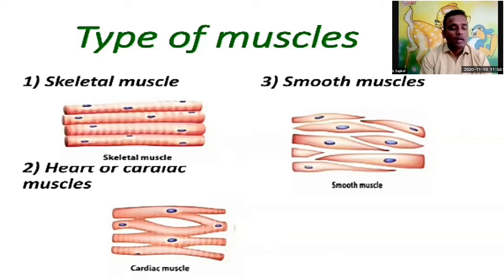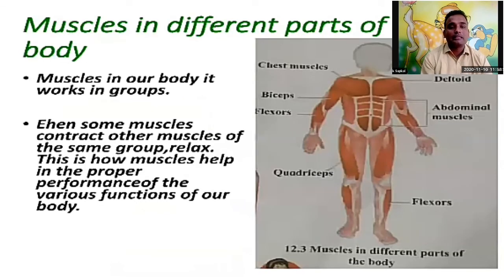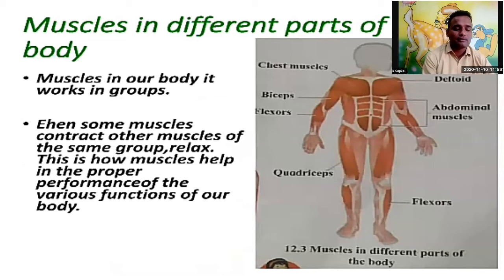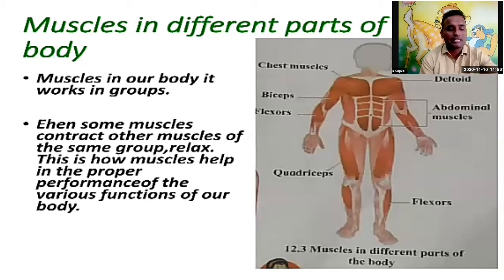Muscles in different parts of the body include the biceps and triceps. Muscles always work in a group — even as some muscles contract, other muscles in the same group relax. This is how muscles help in the proper performance of various body functions. Examples include quadriceps, flexors, biceps, triceps, and chest muscles.